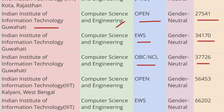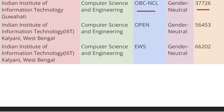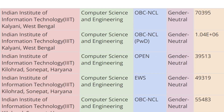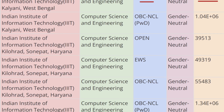Make sure to like and subscribe the channel to get more updates on college-wise and course-wise cutoffs. Moving ahead, we have IIIT Kalyani, West Bengal. For Open category the cutoff rank is 56,453, for EWS category the cutoff rank is 66,202, and for OBC-CL the cutoff rank is 70,395.